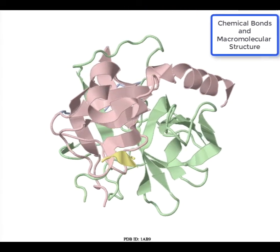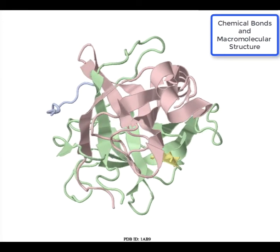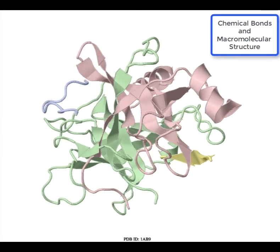This video shows examples of the types of chemical bonds that play important roles in determining and stabilizing three-dimensional protein structure.